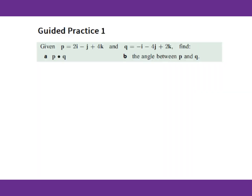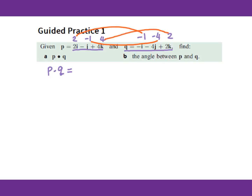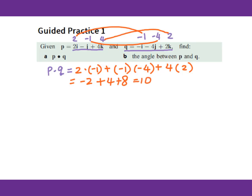Now let's go to guided practice one. Given vector P in unit vector form and vector Q, find P dot Q, the dot product of P and Q. Using the formula of corresponding component multiplication, we have 2, negative 1, 4 for P and negative 1, negative 4, 2 for Q. Therefore, we compute 2 times negative 1, plus negative 1 times negative 4, plus 4 times 2. That gives us negative 2 plus 4 plus 8, which equals 10.